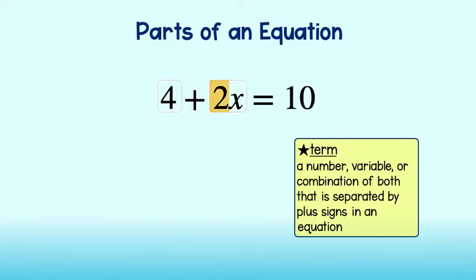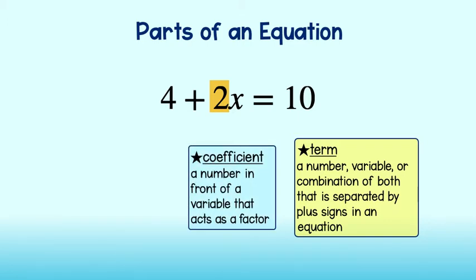If you see a number or letter in front of a variable, such as this 2, it is called a coefficient. A coefficient is a number in front of a variable that acts as a factor in a term.